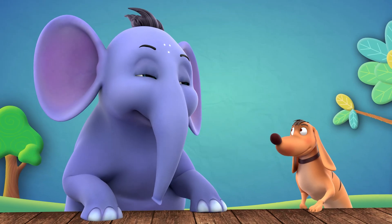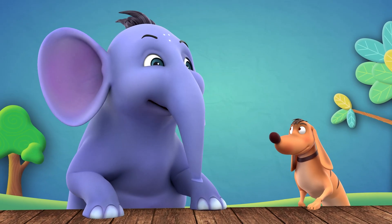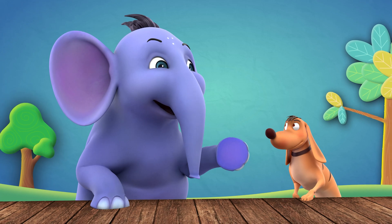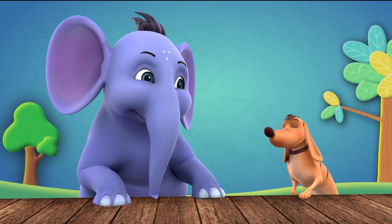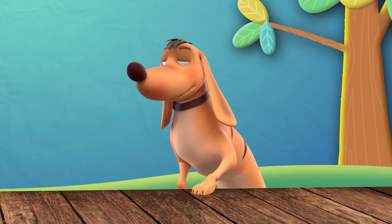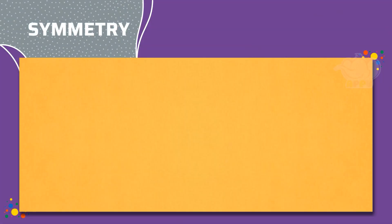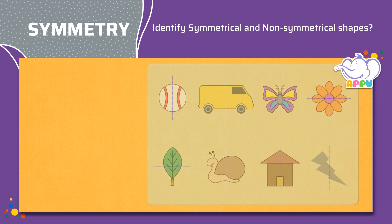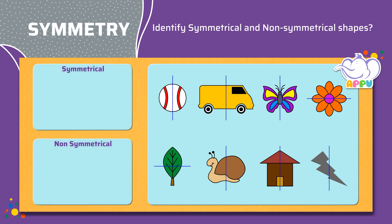Have a nice look at the shapes below and see if you can identify symmetrical and non-symmetrical shapes. Identify if the shapes are symmetrical along the dotted line and place them in the appropriate boxes.